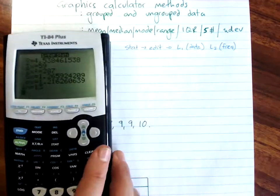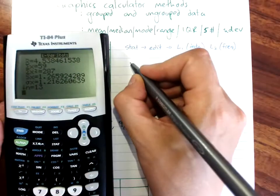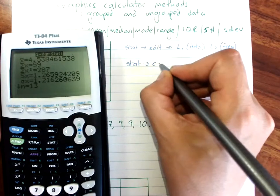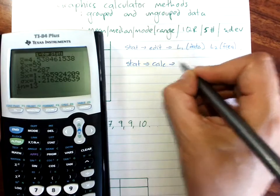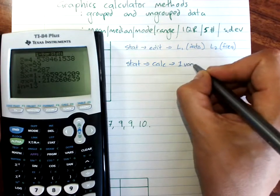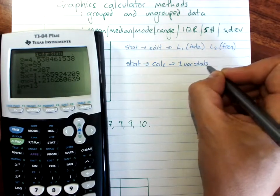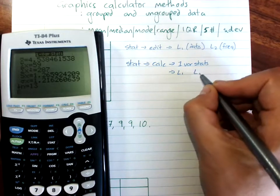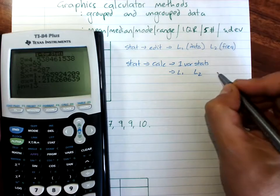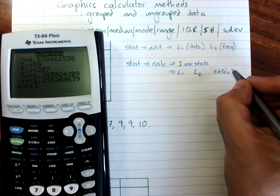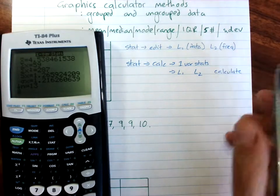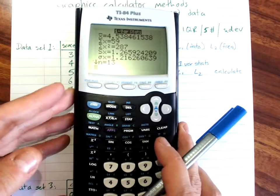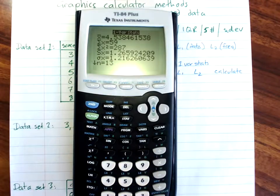And here is our data. So we'll write that down. What we did, stat, move across to calc, one variable stats. And we want L1 and L2 for frequency, and enter or calculate depending on your calculator. Now what this gives me is a bunch of really useful information.